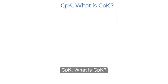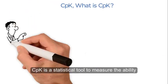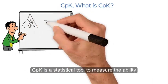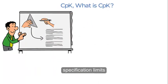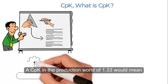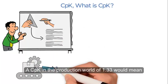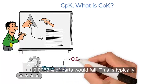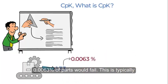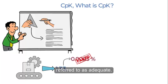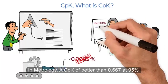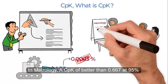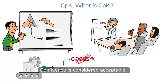CPK is a statistical tool to measure the ability of a process to produce output within tolerance specification limits. A CPK in the production world of 1.33 would mean 0.0063 percent of parts would fail — this is typically referred to as adequate. In metrology, a CPK of better than 0.667 at 95 percent confidence is considered acceptable.